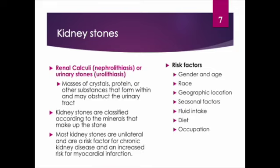Kidney stones, also called renal calculi or nephrolithiasis, and urinary stones or urolithiasis, are formed from crystals, proteins, and other substances that become masses causing urinary tract obstruction. In the US, approximately 9% of patients will suffer from a kidney stone, and it's more common among men. Once you've had a kidney stone, the recurrence rate is high — within the next 10 to 15 years, there's a 30 to 40% increased risk of another stone.